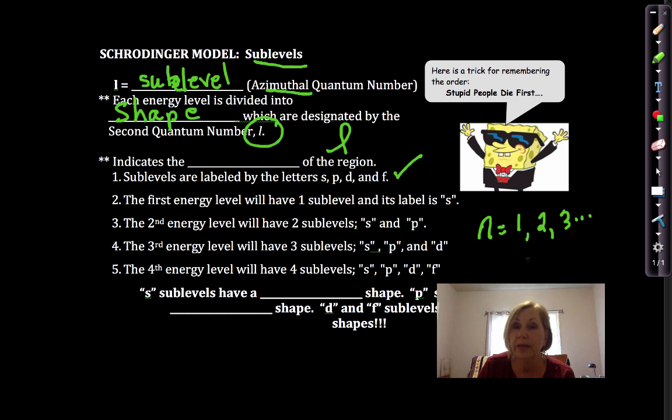So the first four are S, P, D, and F, sharp, principal, diffuse, and either fine or fundamental. I've seen it both ways. A student came up with a trick. He said, you know, stupid people die first. S, P, D, F. So if that's a mnemonic device you need to remember, then hopefully that helps you wrap your mind around it.